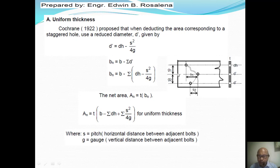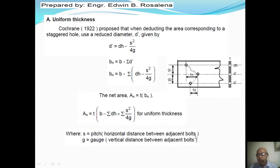The net width in a staggered pattern equals the gross width b minus the summation of d prime, where d prime = dh − s²/4g. So the net width equals b minus the summation of (dh − s²/4g). Here, s is the horizontal distance between adjacent holes — called the pitch — and g is the gauge, the vertical distance between adjacent bolts.